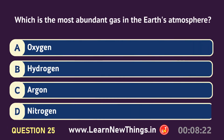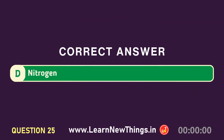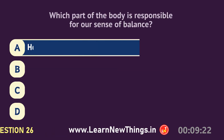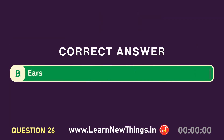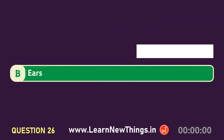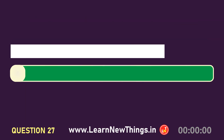Which is the most abundant gas in the Earth's atmosphere? Nitrogen. Which part of the body is responsible for our sense of balance? Ears. Which instrument is used to measure temperature? Thermometer.